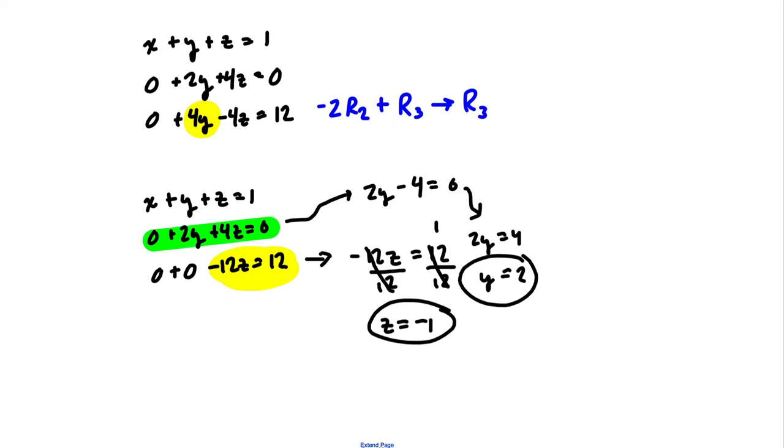And then we go here to our first equation, and we can see that x plus y, so y is 2, plus z is negative 1, has to equal 1. Well, 2 plus negative 1 is 1, and x plus 1 has to equal 1, so x is 0. And that is our solution here.